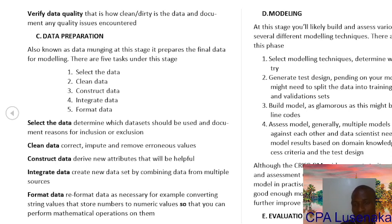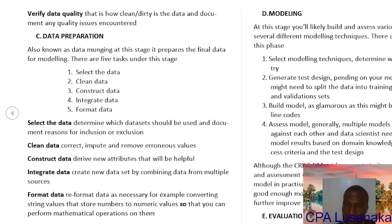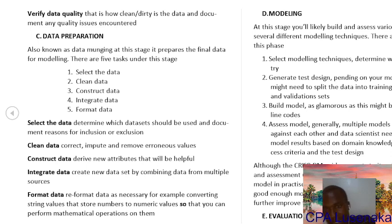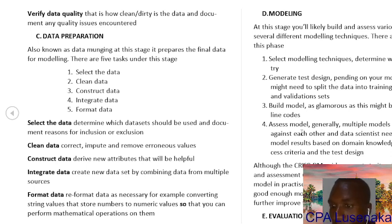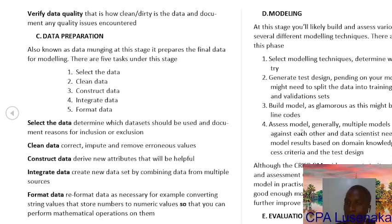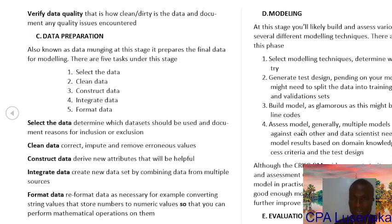It is important to note that CRISP-DM is a guide — an international framework for data mining. Although CRISP-DM suggests iterating model building and assessment until you have the best model, in practice after modeling you should continue iterating the model. Once you find a good enough model, proceed through the ML lifecycle and continue to further improve the model — iterating means continuously assessing the model for future improvements.